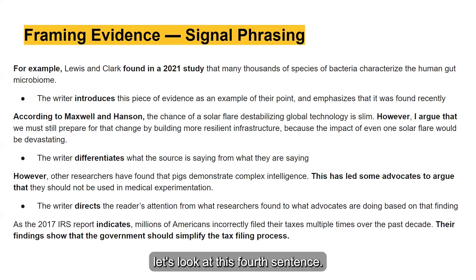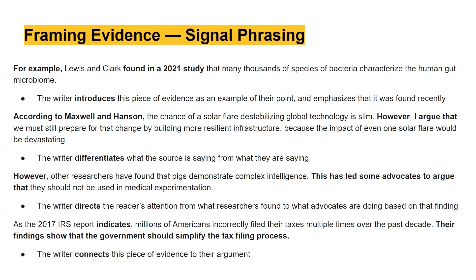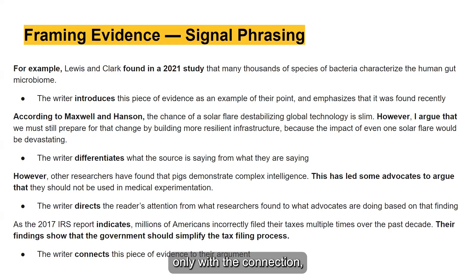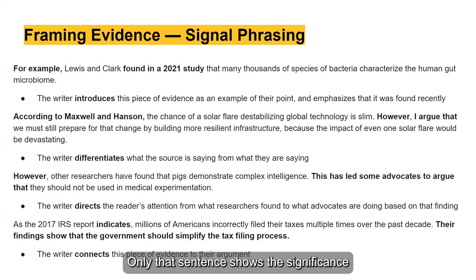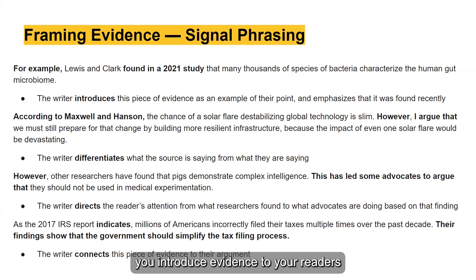Finally, let's look at this fourth sentence: "As the 2017 IRS report indicates, millions of Americans incorrectly filed their taxes multiple times over the past decade. Their findings show that the government should simplify the tax filing process." Here, the writer connects this evidence to their argument. Without the second sentence, the reader has no idea why the writer mentions incorrectly filed taxes. Only the connection showing that findings support simplifying tax filing reveals the significance of that evidence.